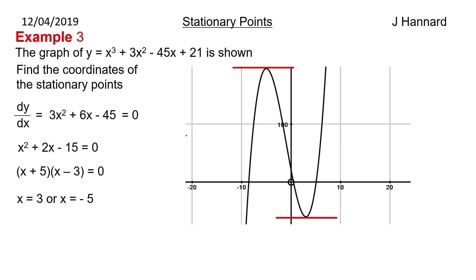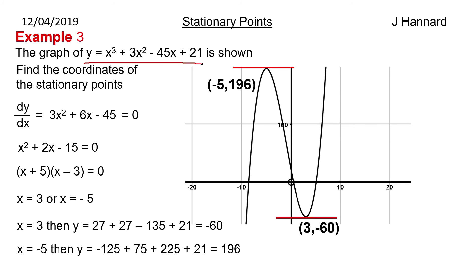So our x coordinates are 3 and minus 5. To find the respective y coordinates of those you stick those x coordinates back into our original equation for y. So we get y equals 27 plus 27 minus 135 plus 21 when x equals 3, y equals minus 60. And when x equals minus 5, y equals 196. So our two coordinates are 3, minus 60 and minus 5, 196. And that is that.